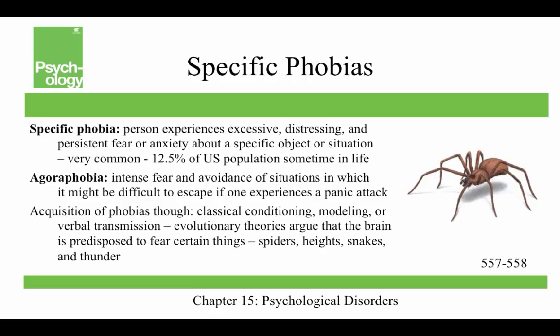Specific phobias are when a person experiences excessive, distressing, and persistent fear or anxiety about a specific object or situation — about 12.5 percent of the U.S. population has a specific phobia at some point. Phobia is a Greek word meaning fear. Agoraphobia, for example, is an intense fear and avoidance of situations where it might be difficult to escape during a panic attack. Phobias may develop through classical conditioning, modeling, or verbal transmission. Evolutionary theories argue the brain is predisposed to fear certain things such as spiders, heights, snakes, and thunder.